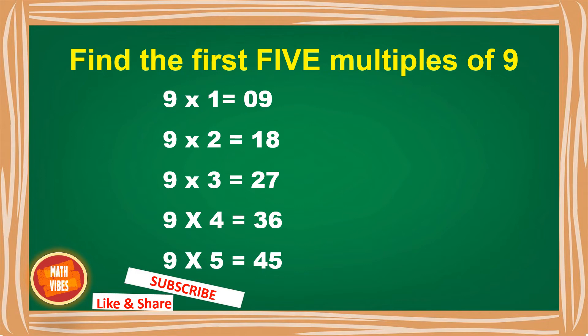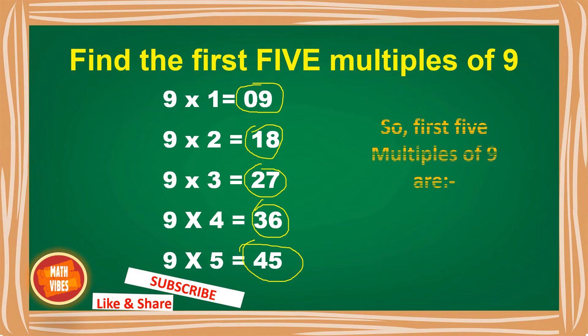Now we know that multiples are the products. So these numbers — 9, 18, 27, 36, 45 — they are the products. So we will write that the first 5 multiples of 9 are 9, 18, 27, 36, and 45.